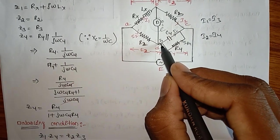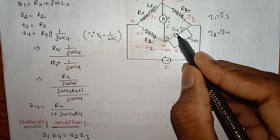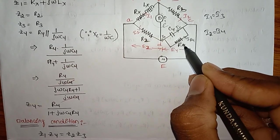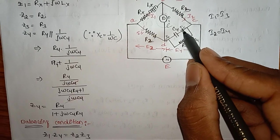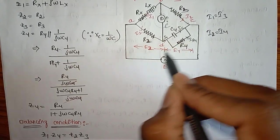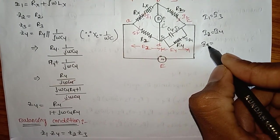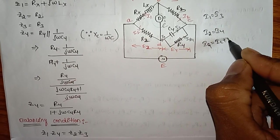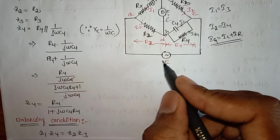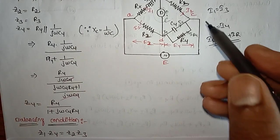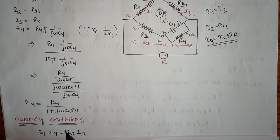Since R4 and C4 are connected in parallel, the current I4 divides into two parts: I4 = Ic + Ir. By adjusting the known values we can obtain the value of Lx. Now we substitute all impedance values into the balancing equation.